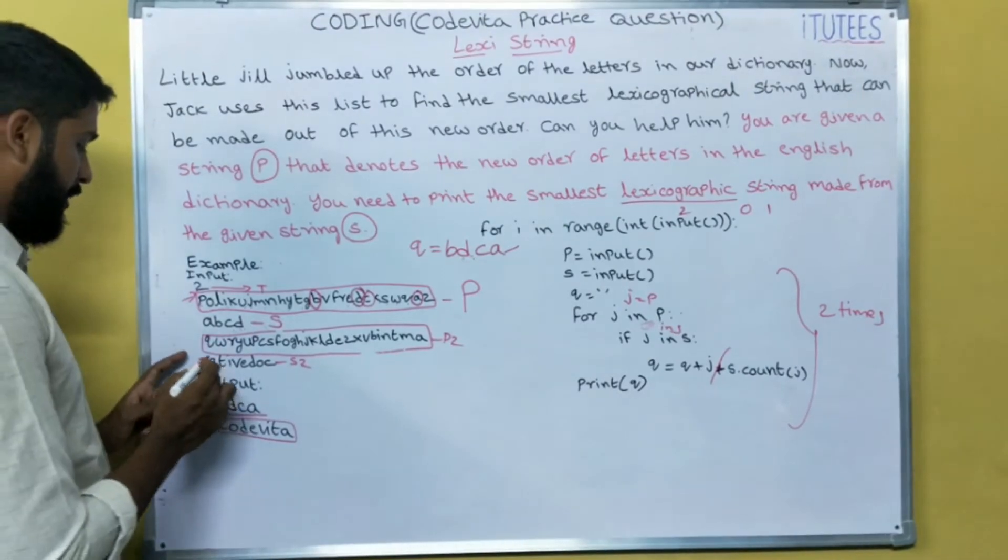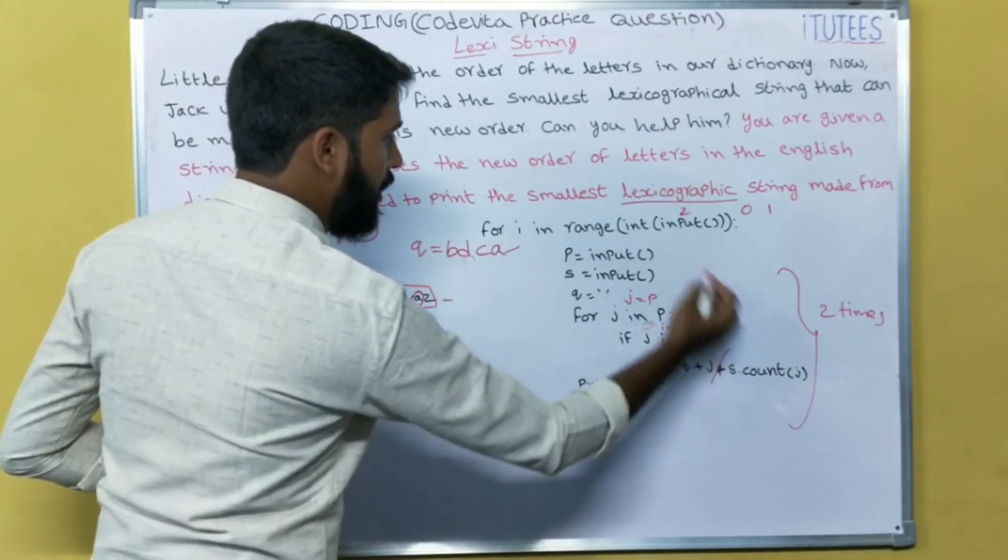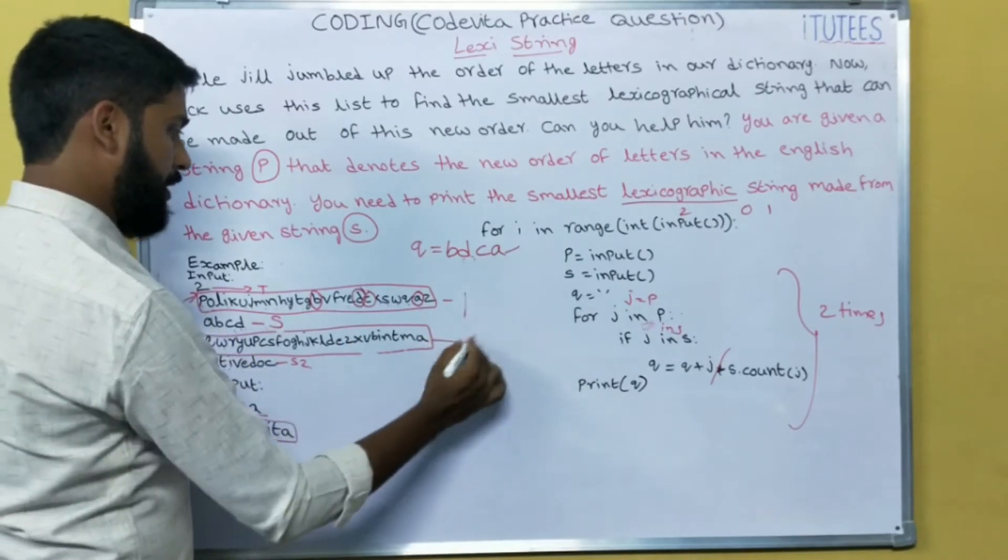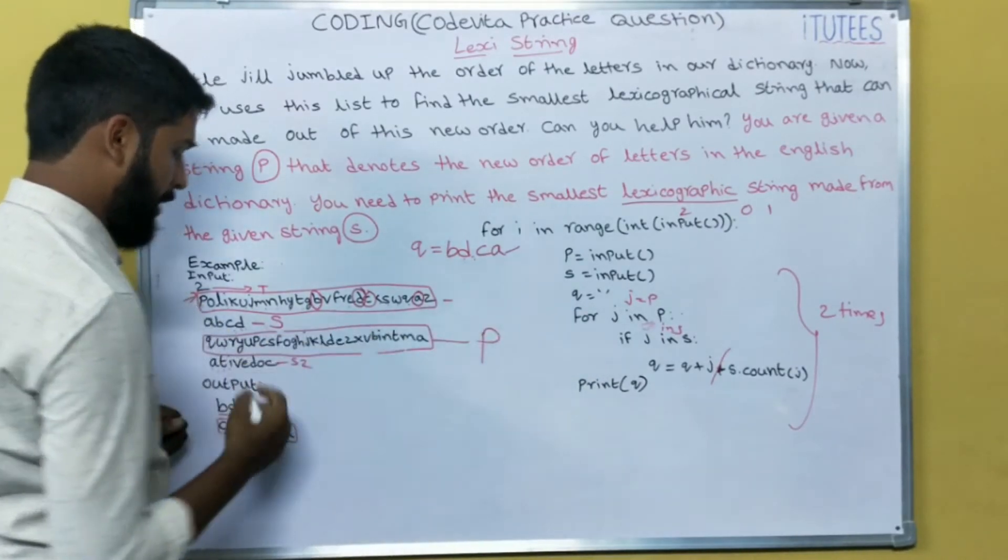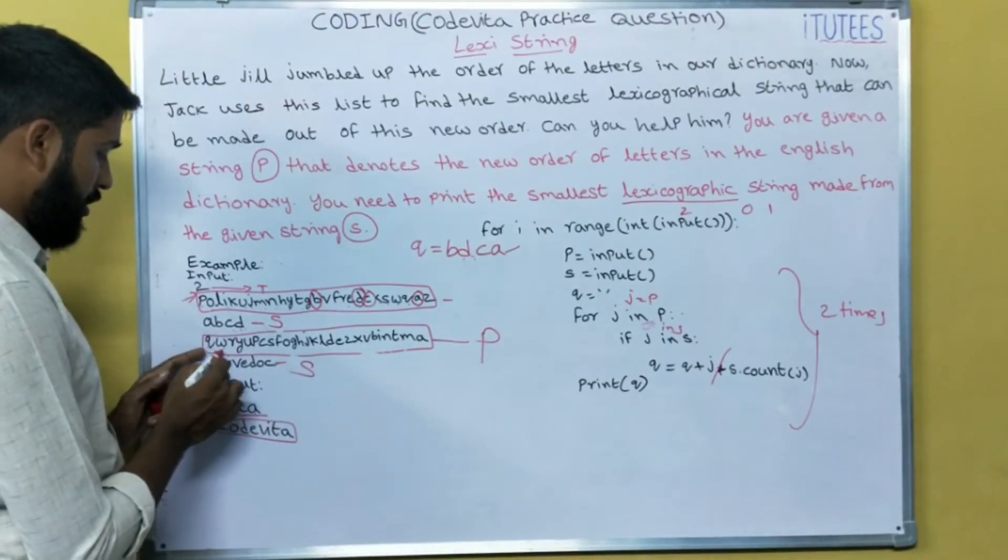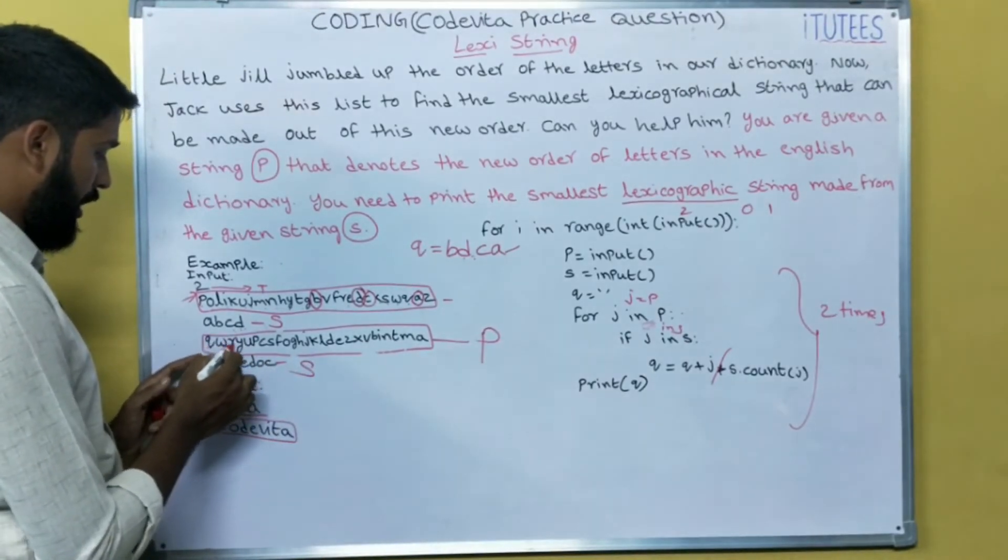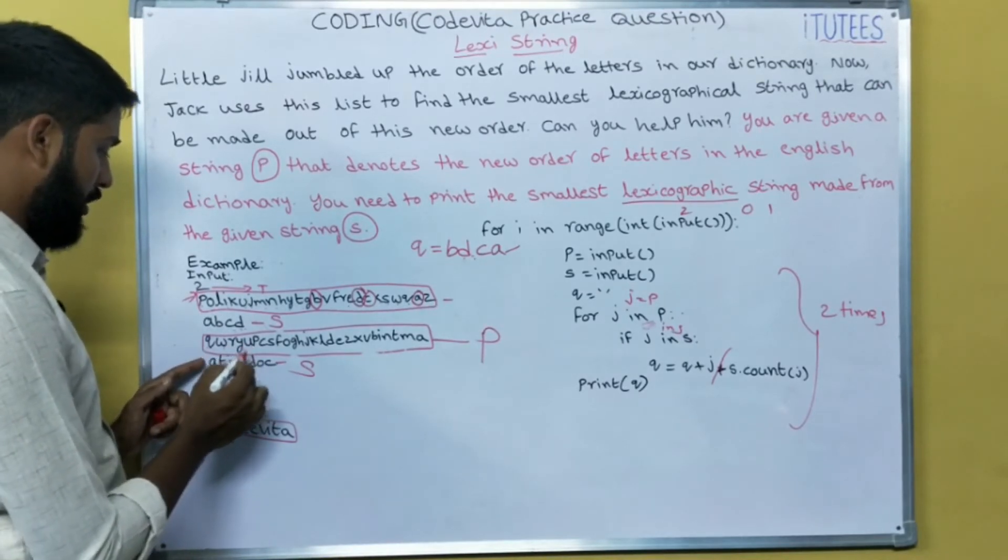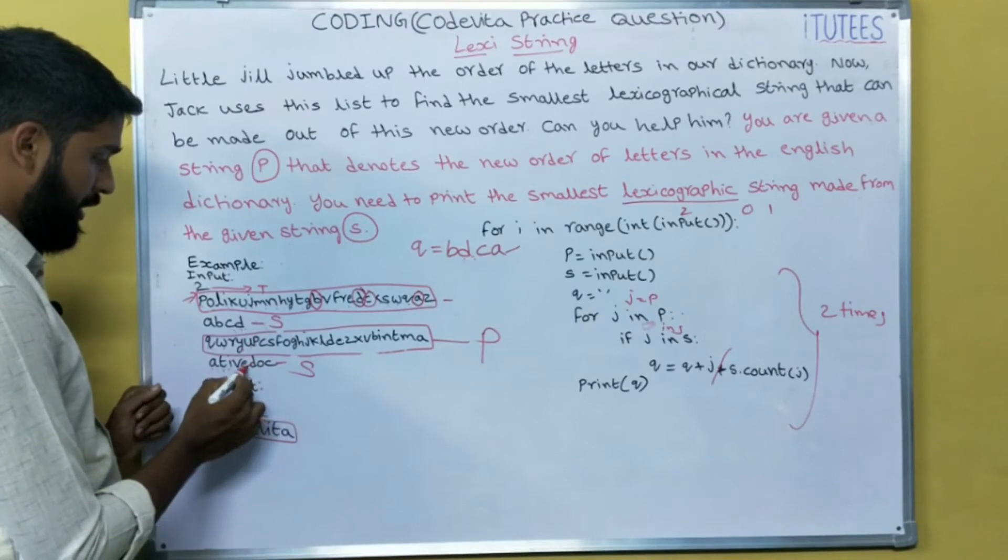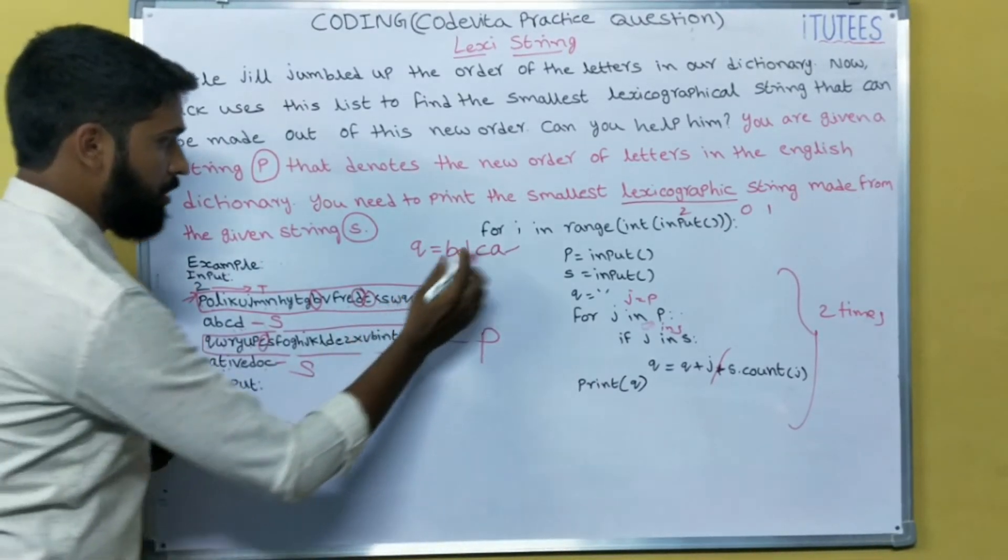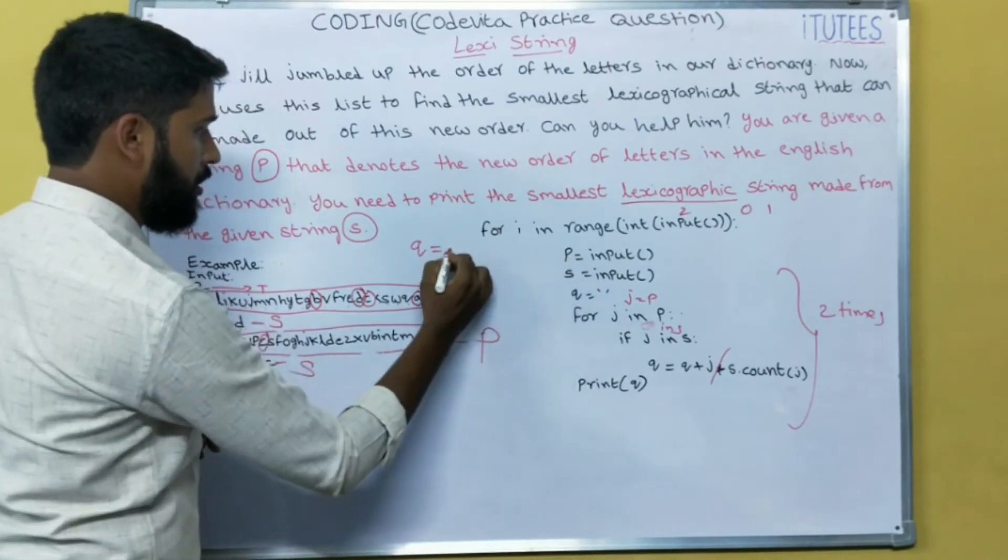So now we can see the second test case. After completion of this, next, P is this. And this is the S. Q is in S? No. W is in S? No. R is in S? No. Y is in S? No. U is in S? No. P is in S? No.